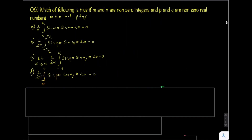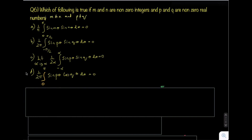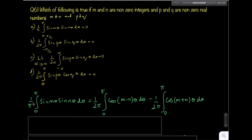Let us solve the last question from signals and systems. Which of the following is true if M and N are non-zero integers and P and Q are non-zero real numbers, where M ≠ N and P ≠ Q? Let us expand the first option: (1/π) ∫ from 0 to π of sin(Mθ)·sin(Nθ) dθ, where M and N are integers.